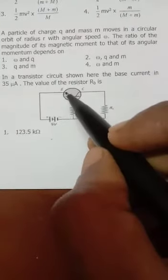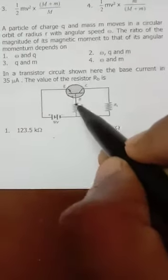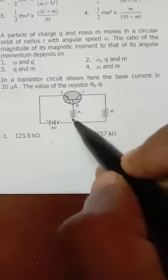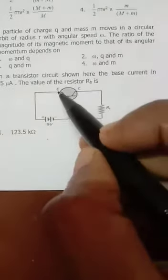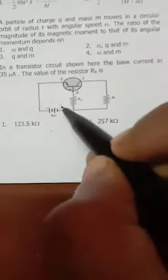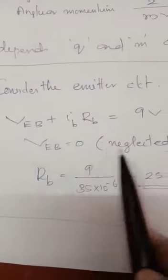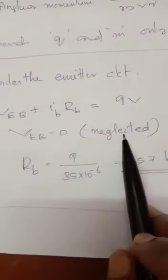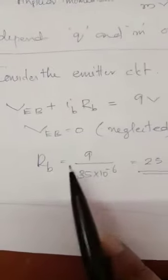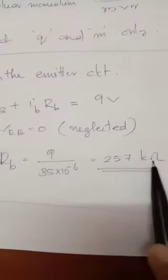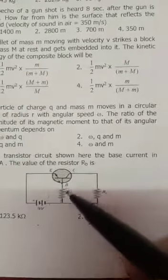Emitter-base junction forward biased, voltage drop VBE. In this branch the current is IB, IB into RB drop. So VBE plus IB·RB equals 9 volts. Considering the emitter circuit, VEB plus IB·RB equals 9 volt. VEB is actually 0.7 volt for silicon transistors but we are neglecting that, therefore RB approximately 257 kilo-ohm.